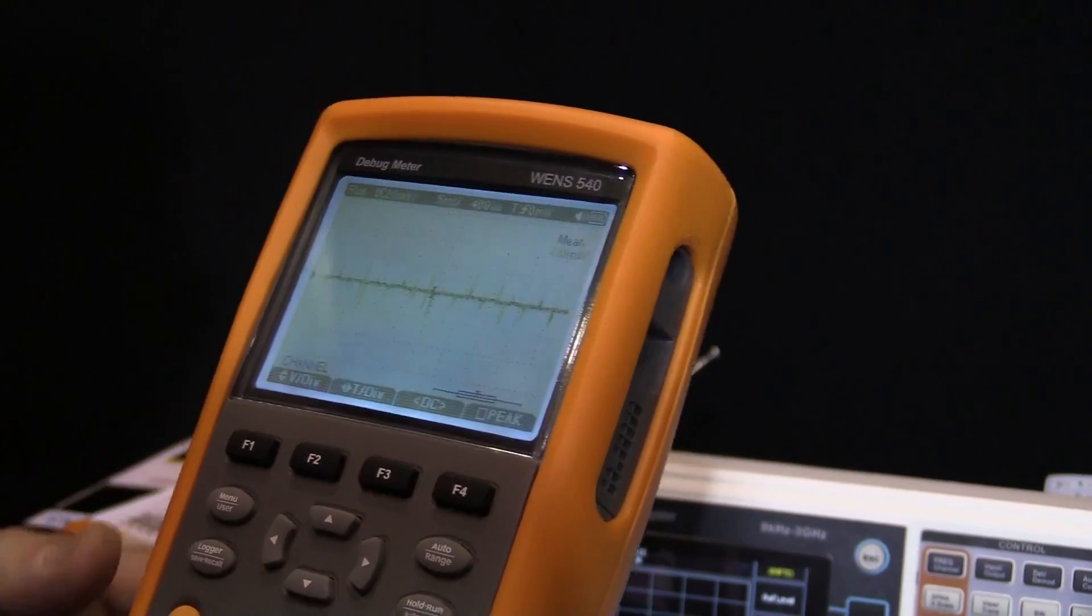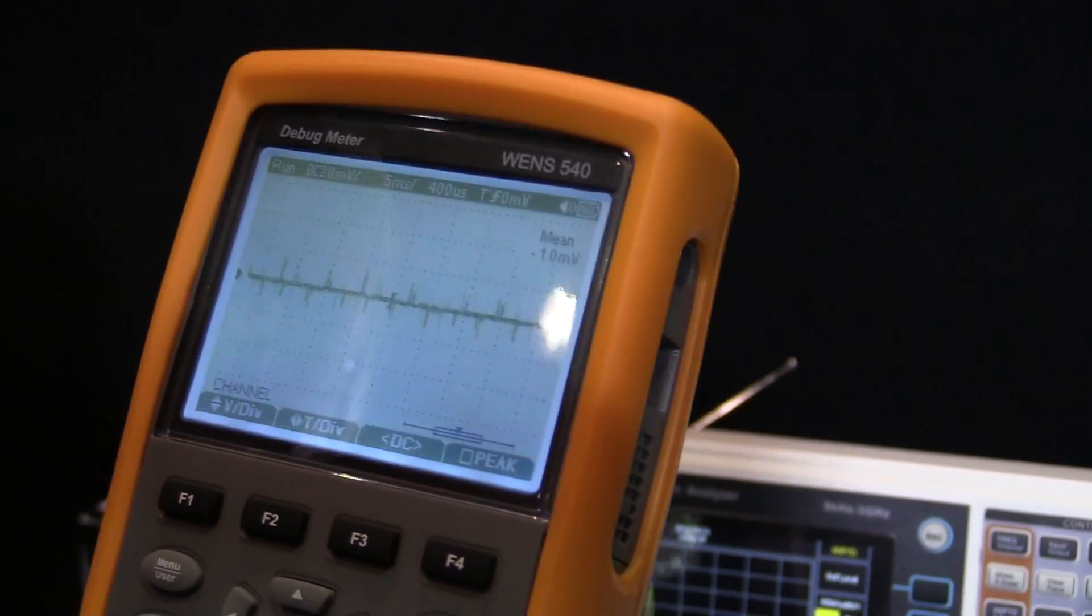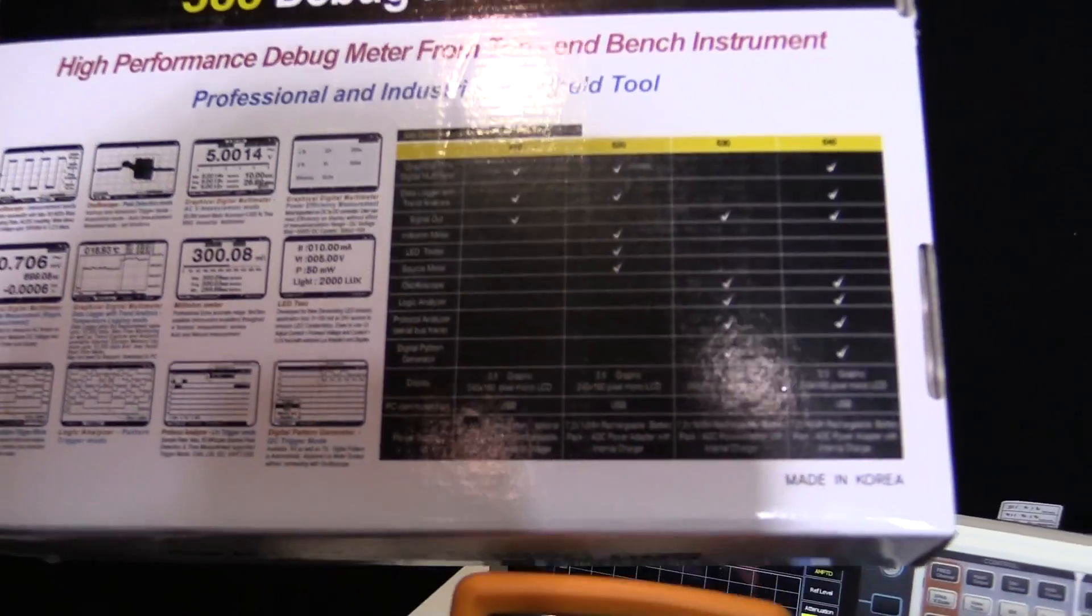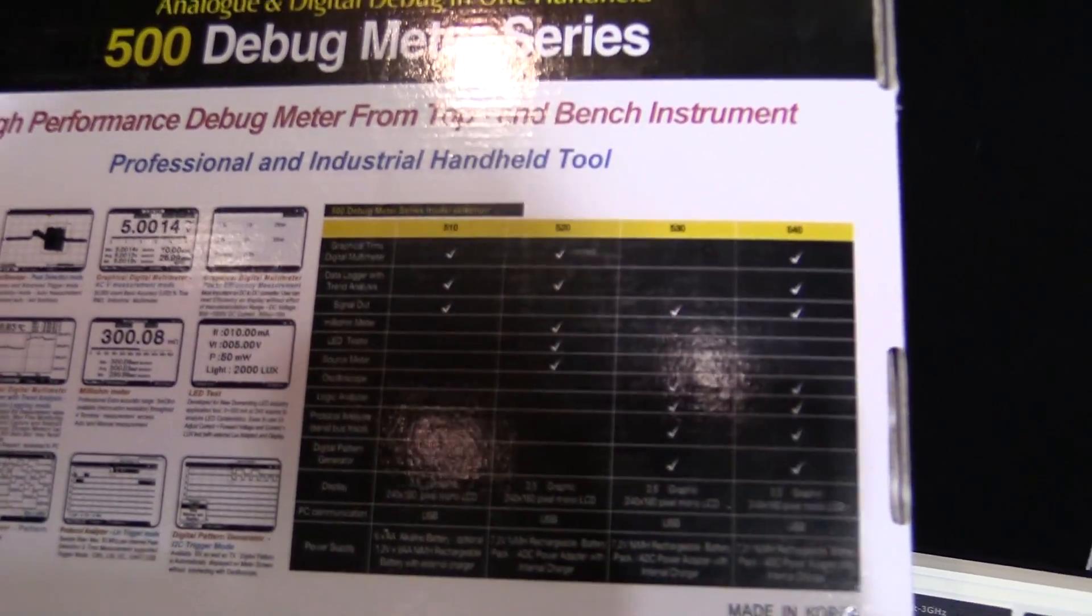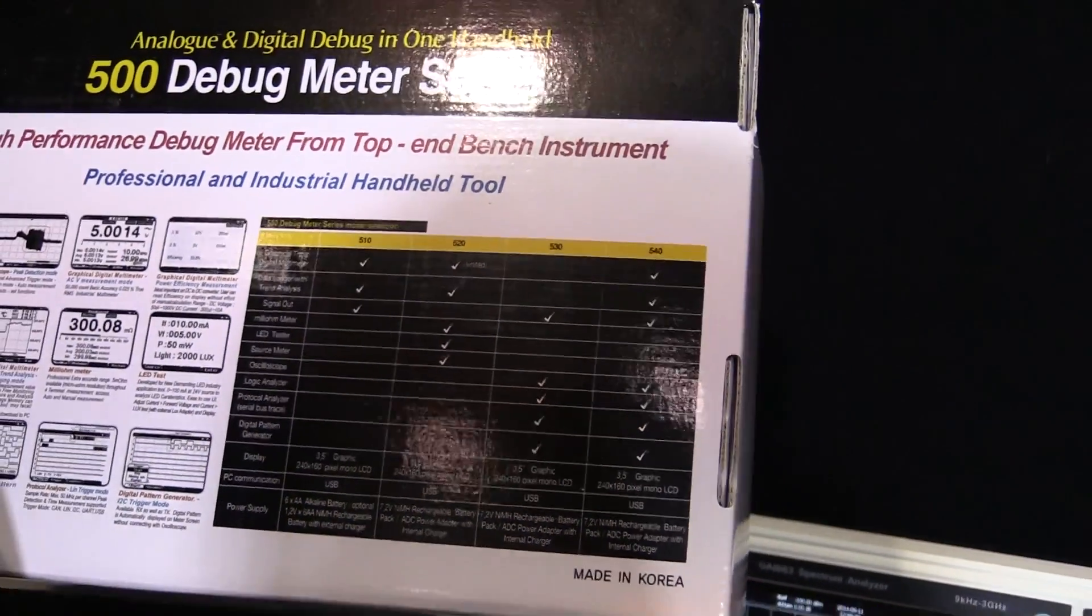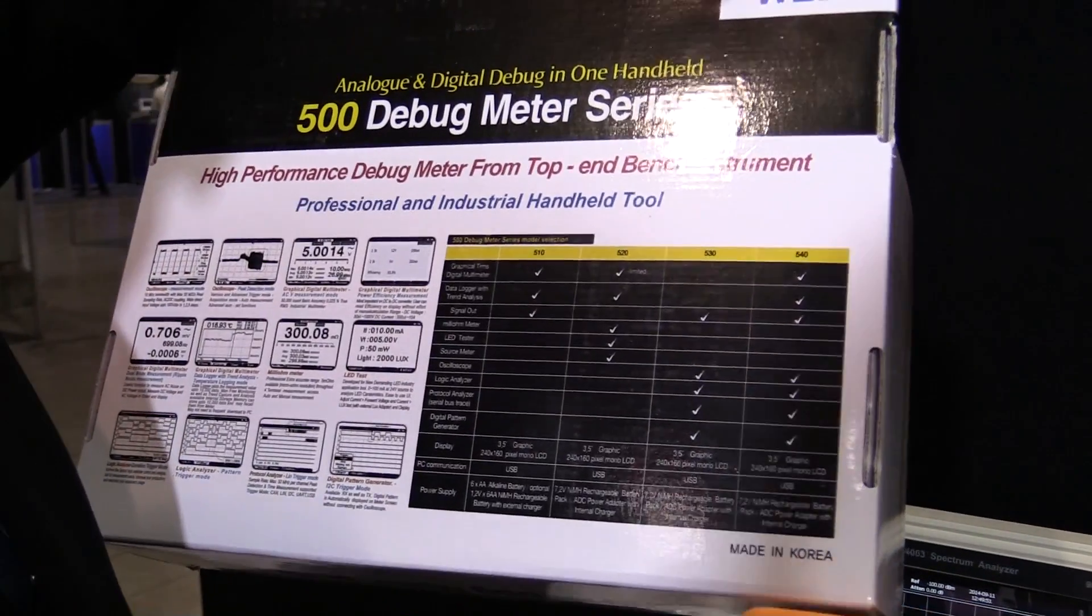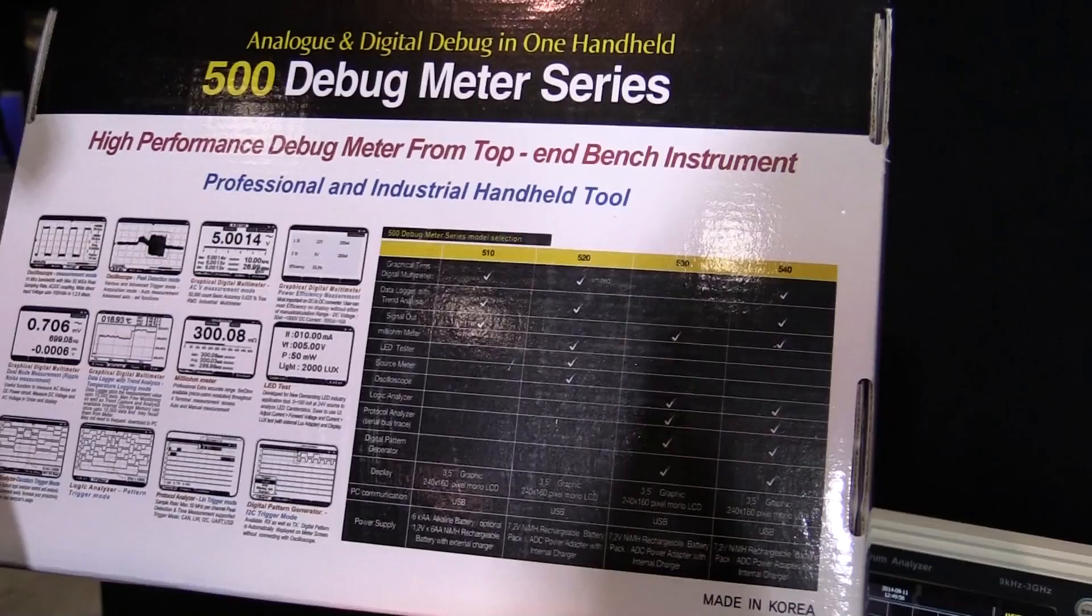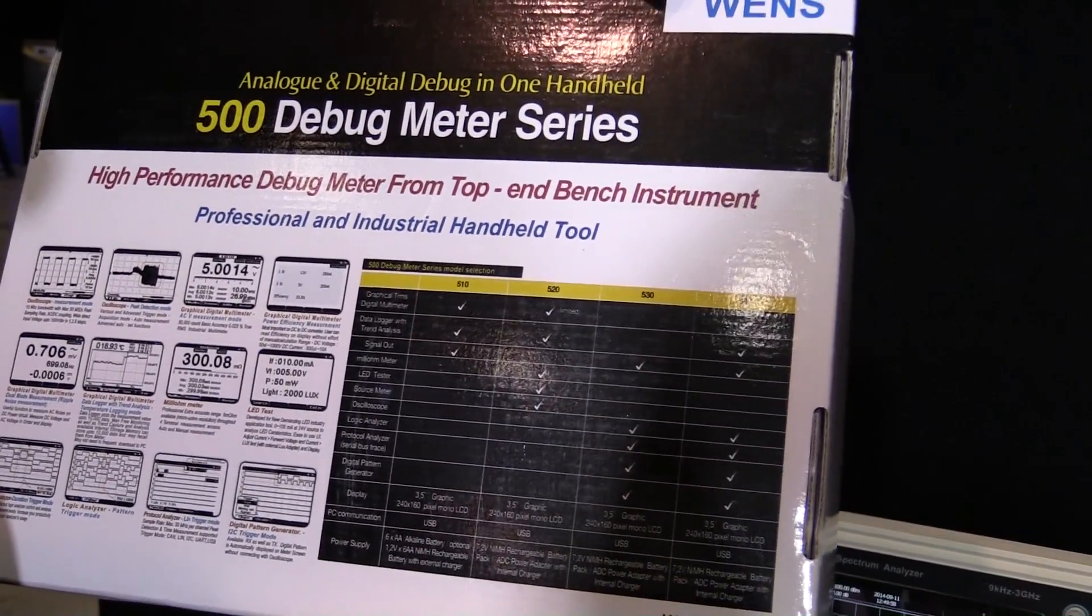And it's called a debug meter. If you look at the box, you'll see there's actually a range of debug meters. The one we're looking at is the 540, which is more on the electronics and communication side of debugging. Whereas we do have an electrical version as well which has got a milliohm meter, LED tester, all that sort of thing in it.